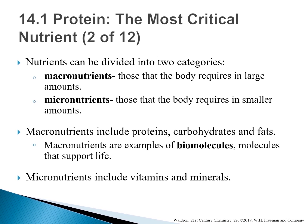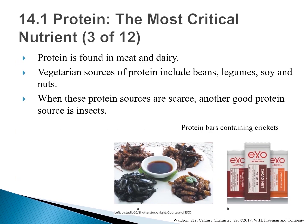Note that vitamins are organic substances, whereas minerals are inorganic substances. Protein is present in meat and dairy products, and also in vegetarian foods such as beans, legumes, soy, and nuts. When these protein sources are limited, another good protein source is insects. Insects provide as much protein as meats and dairy but a lot less fat, and can be raised much more efficiently than livestock without significant environmental impact.